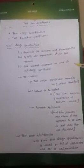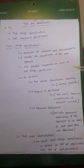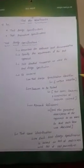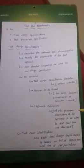It contains the test design specification identifiers, which are used to identify uniquely. After that, it covers the features to be tested — test items, features, and combinations of features. Approach refinement means each and every test item is described by the test plan's general descriptions.